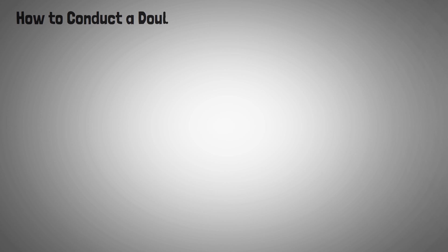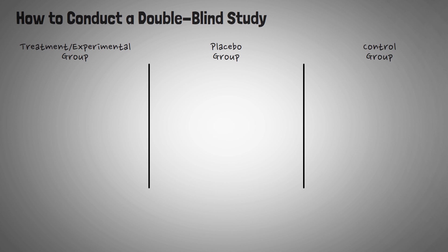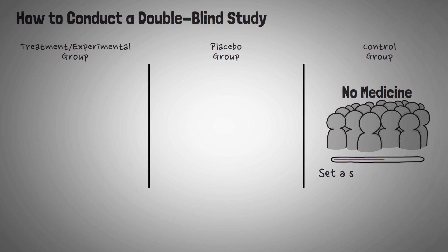Next up, I want to talk about how to conduct a double blind study. Subjects in double blind studies are typically divided into three different groups: the treatment or the experimental group, the placebo group, and the control group. Participants who are not receiving any treatment are placed in what is called the control group. This group serves as the baseline for determining whether the medication in question has any significant effects. If the control group gets better over time, then this improvement will set a standard against which the other two groups will be compared.